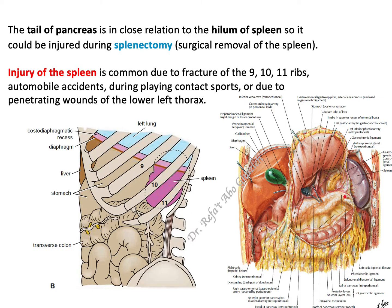Another important clinical point: the tail of the pancreas is inserted within the splenorenal ligament in close relation to the spleen. Therefore, if a splenectomy — surgical removal of the spleen — is the only way to treat the spleen, you must ensure that the tail of the pancreas is not injured during surgery, as injury is common due to its close anatomical relationship to the spleen.